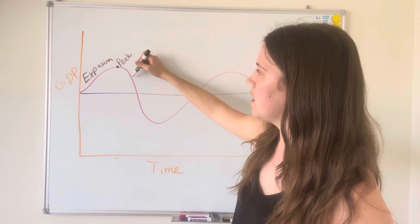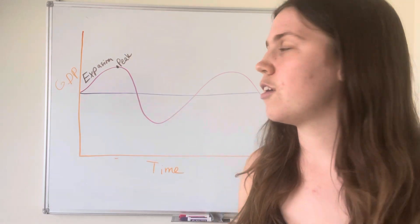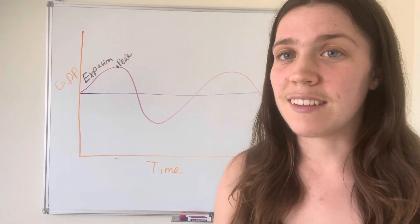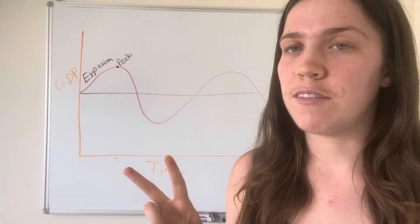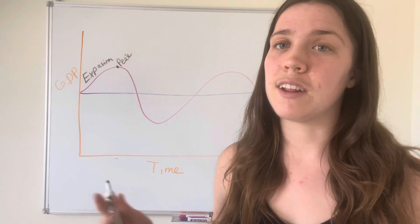Next thing you see our graph doing is going down, and this is going to be a recession. And so for it to be classified as a recession, it has to be two consecutive periods of time, which means a minimum of six months of declining GDP.